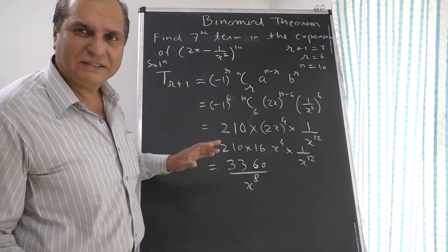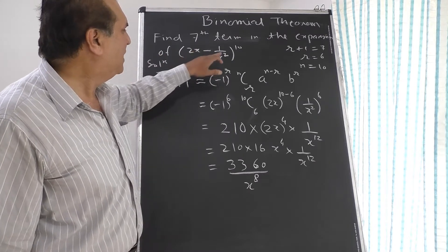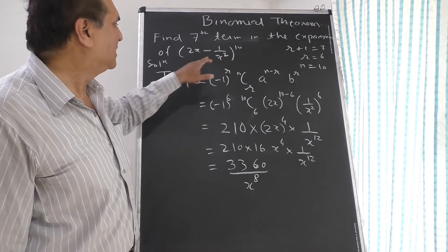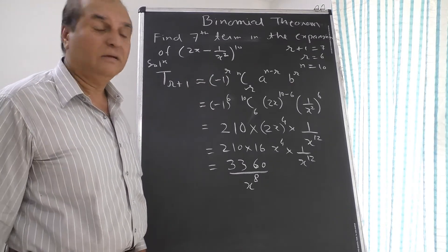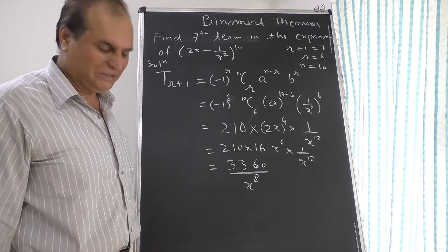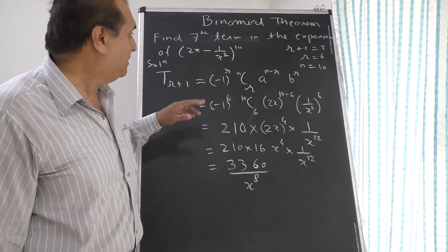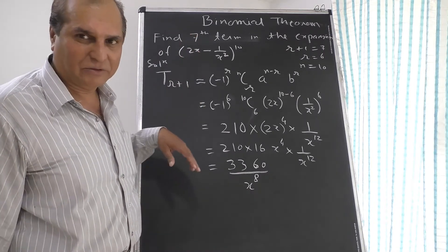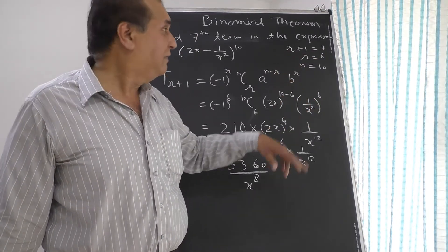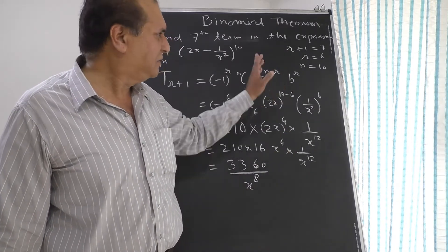In this problem you just have to find the seventh term in the expansion of (2x minus 1 upon x squared) raised to 10. This is a binomial raised to power 10. To find the seventh term, will you expand all eleven terms? No. For a particular term, whenever the seventh term you have to find, it means r plus 1 equals 7, so r equals 6.